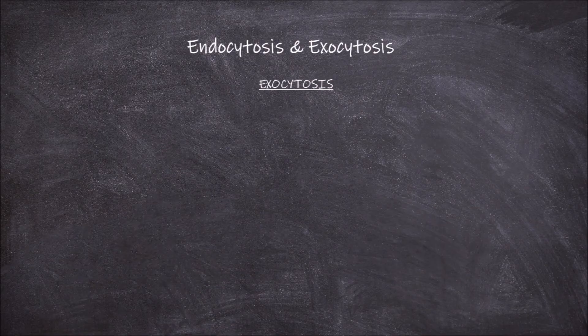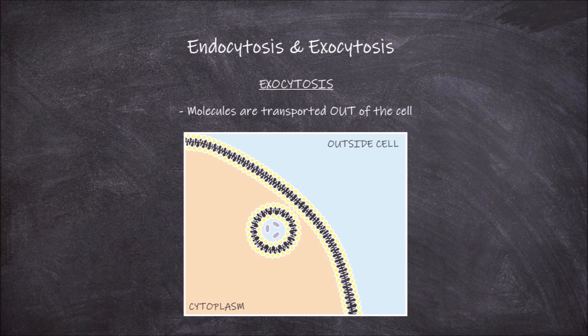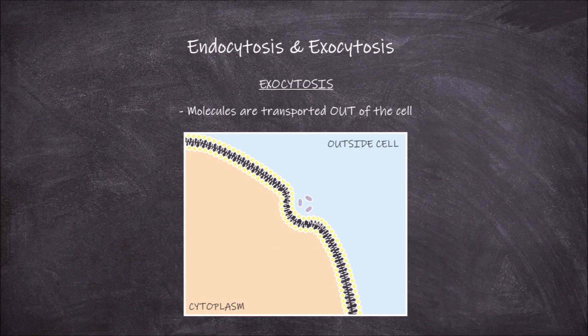Exocytosis, on the other hand, is the process where molecules are transported out of the cell via vesicles that fuse with the cell membrane, releasing the contents into the extracellular space. The first step of exocytosis involves secretory vesicles from within the cell moving towards the cell membrane. The vesicle then fuses with the cell membrane and eventually becomes part of it, which causes the contents to be expelled into the extracellular space.